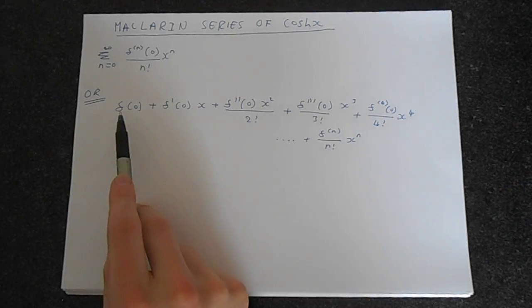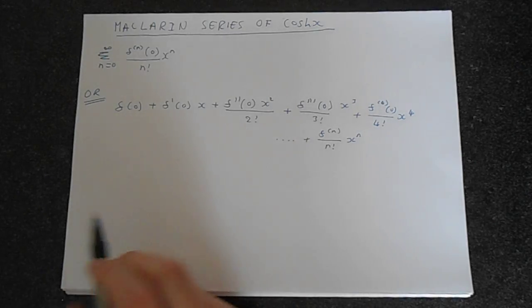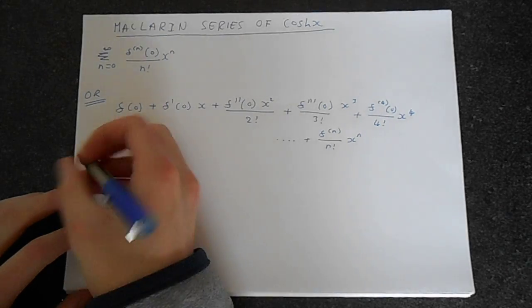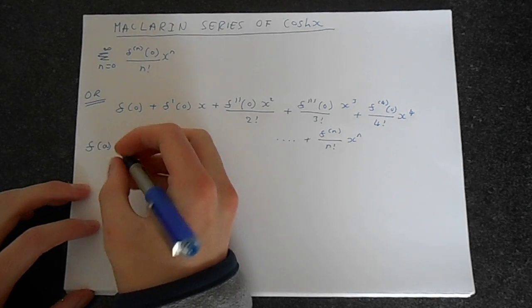So we're going to find the values of the function and its derivatives at 0. So let's start by finding the derivatives. Let's just say we'll call this f of a, and a will later be 0.